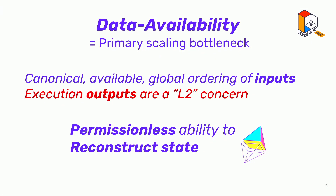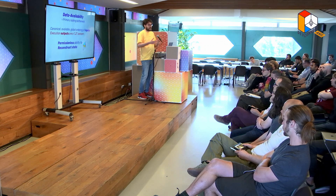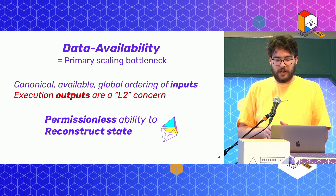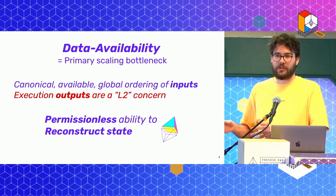So what's data availability? It's the primary scaling bottleneck of Ethereum. I'm sure you've all experienced the expensive call data. We have a canonical, available, global ordering of inputs — that's what the data is about. You realize that we can separate the outputs: you can separate layer 2, you can separate the execution layer — whatever you want to call it — as a different scaling bottleneck.